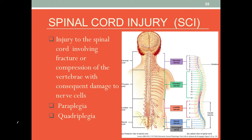Injury to the spinal cord involves a fracture or a compression of the bone structure — of the vertebrae — and the result of this damage hurts the nerve cells. The spinal cord goes all the way down, connecting to the brain and also to peripheral tissue through paired nerves that go out to both sides of the body.